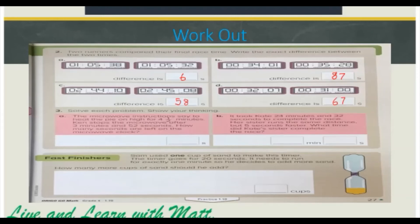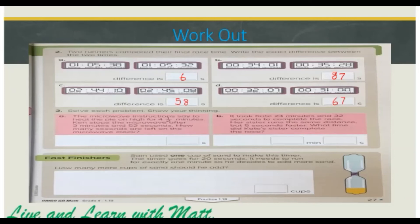Now number three, solve each problem, show your thinking. The microwave instructions say to heat the pie on high for four and a half minutes. Ken stops the microwave after three minutes 52 seconds. How many seconds are left on the microwave clock? So four and a half minutes will be four minutes 30 seconds. Subtract three minutes 52 seconds from four minutes 30 seconds, and that will give us 38 seconds.